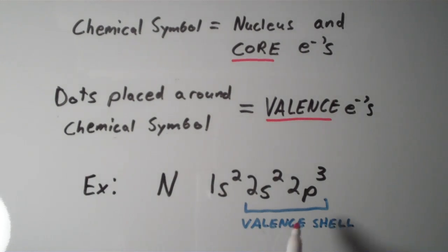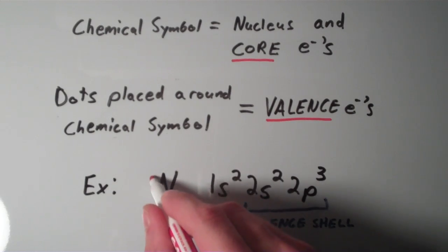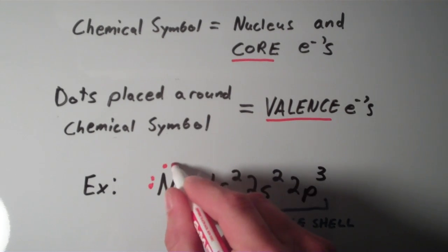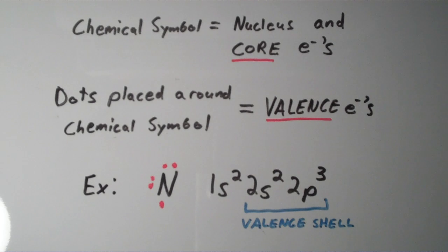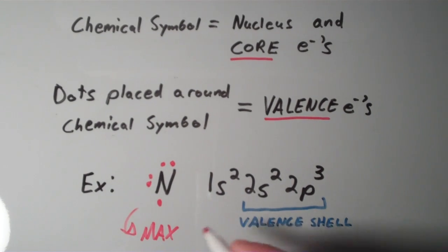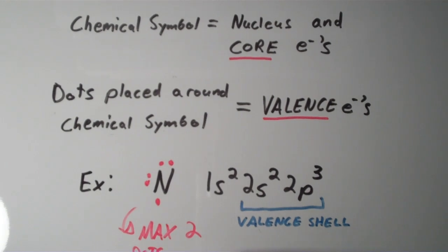So, to represent the valence electrons of nitrogen, there's going to have to be 5 around here. So I'll place them, say like that. That is a legitimate Lewis structure for nitrogen. And one of the rules when you place the dots around the 4 sides of this chemical symbol is you want to have a maximum of 2 valence electrons, or a maximum of 2 dots per side.